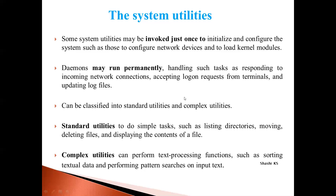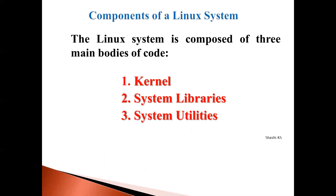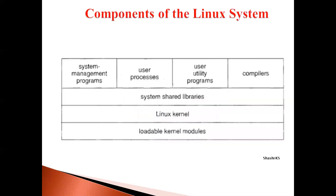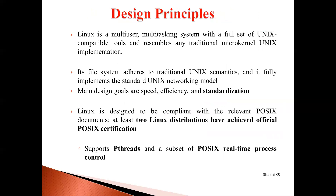To summarize, the components of the Linux system can be categorized into three levels. At the bottom-most level, we have the kernel and loadable kernel modules. The middle level has the system libraries. The third level has the system utilities. That is all about the components of the Linux system and the design principles of the Linux operating system.